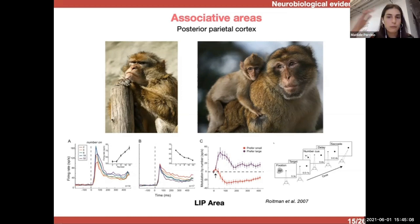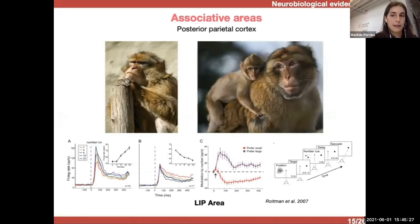So, there was this lateral intraparietal area, where there were these neurons that respond monotonically to numbers, in the sense that they increased their firing rate with increasing numerosity, as you can see here on this graph. And this has been called summation coding. And these monkeys were not trained, so they just had to pay attention to the screen, as you can see here.